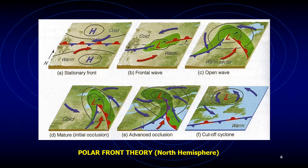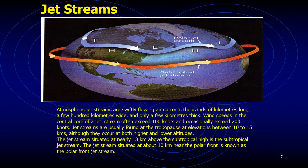You can think of the sequence of a developing wave cyclone as a whirling eddy in a stream of water that forms behind an obstacle, moves with the flow, and gradually vanishes downstream. The entire life cycle of a wave cyclone can last from a few days to a week.